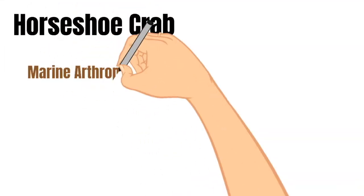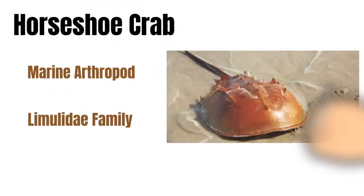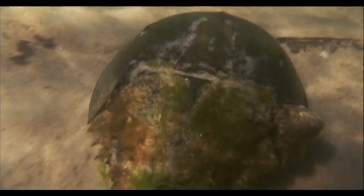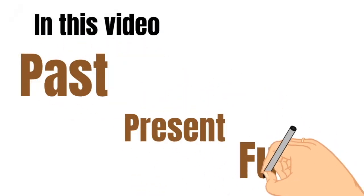The horseshoe crab, a marine arthropod that belongs to the Limulidae family, has been around for nearly 450 million years. They first emerged during the Paleozoic era, the era after which most of the earliest animals appeared. Though the horseshoe crab's exterior appearance hasn't changed much, natural selection has continually refined the horseshoe crab into its modern form through small evolutionary adaptations. In this video, we look at the past and present of the horseshoe crab and make predictions about its future.